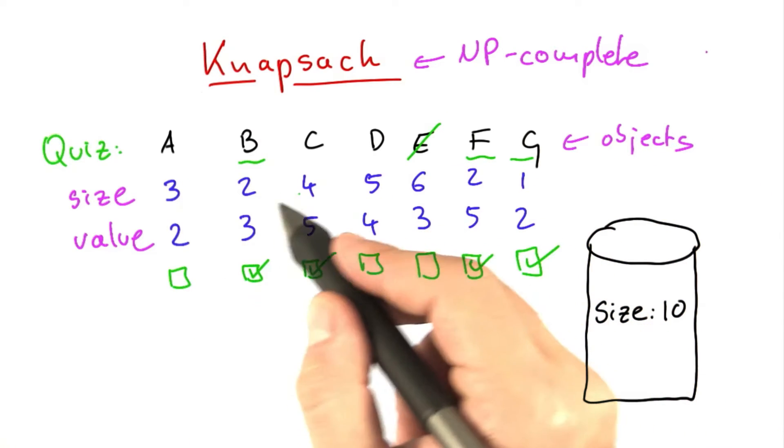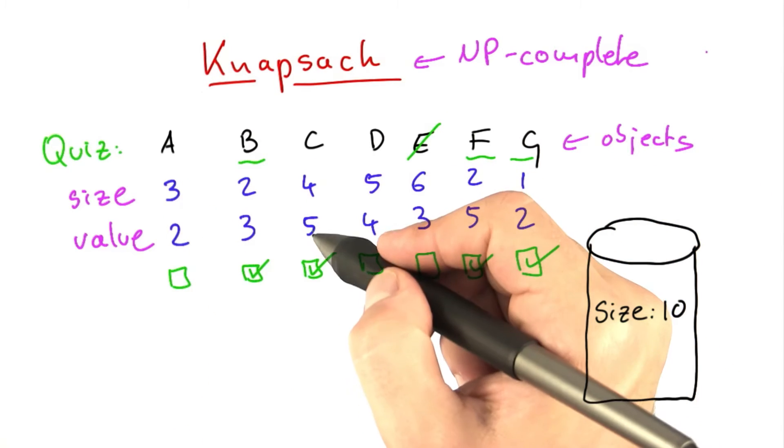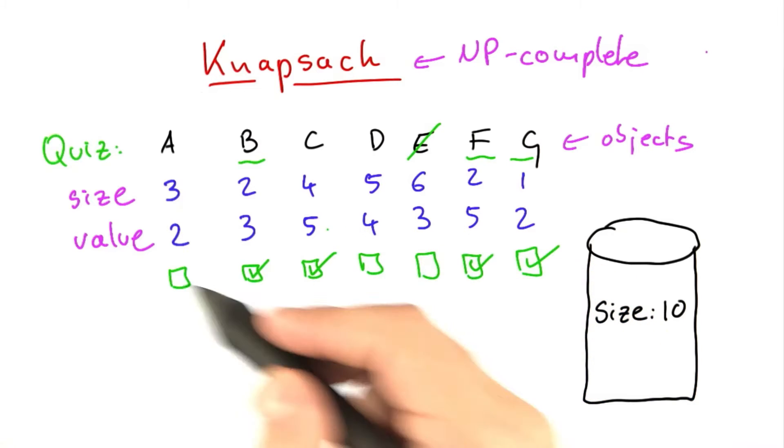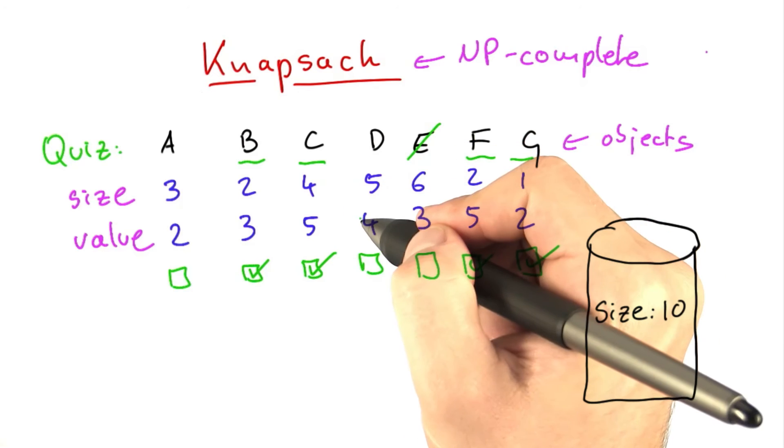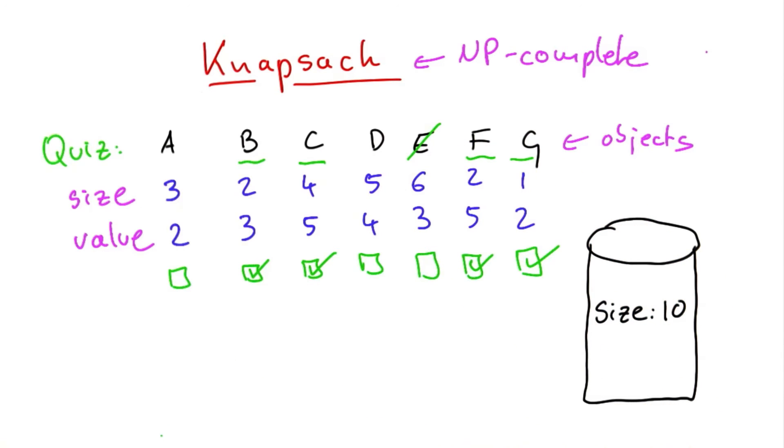And then the best value of the remaining objects, A, C, and D, is given to you by C, which has a value of five as opposed to four and two. And also you cannot put in more than one, so that makes C the only candidate to also put into that container.